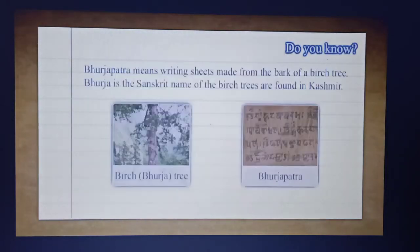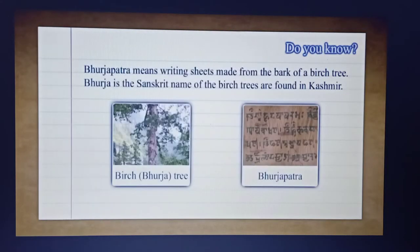Do you know — Bhurja Patra means writing sheets made from the bark of a birch tree. Bhurja is the Sanskrit name of the birch tree. Birch trees are found in Kashmir.